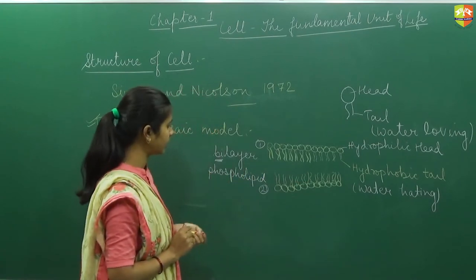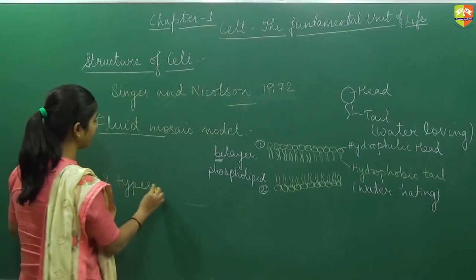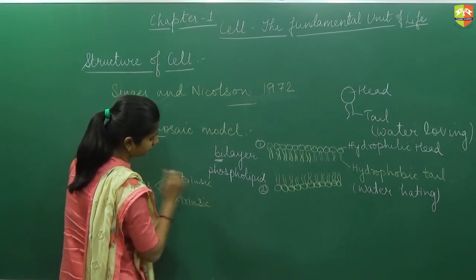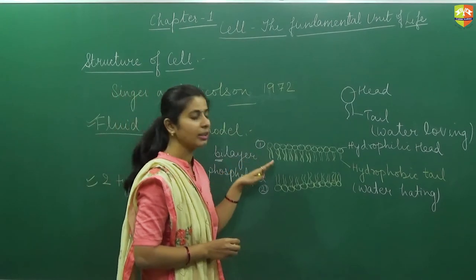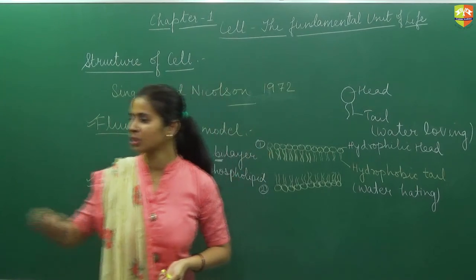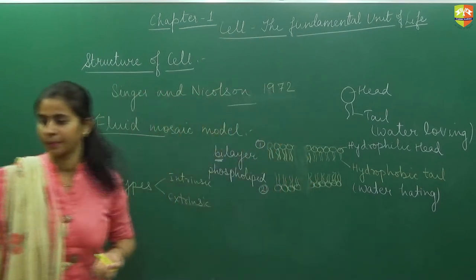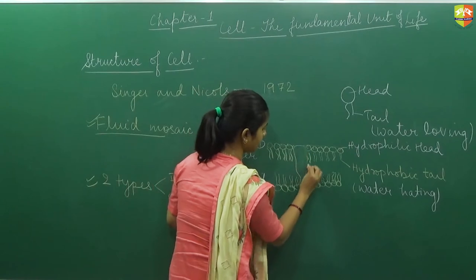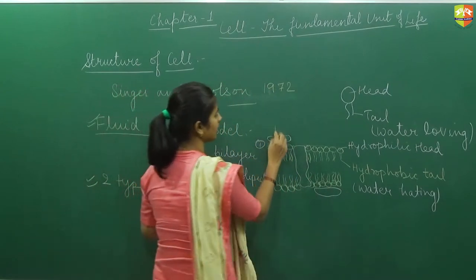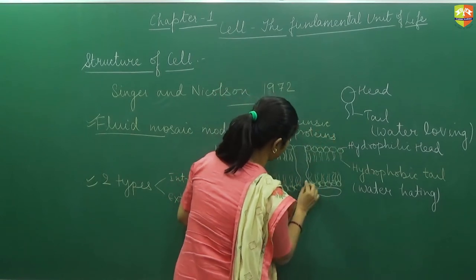One more thing — the structure of the plasma membrane contains two types of protein. The first is intrinsic protein and the second is extrinsic protein. As the name suggests, intrinsic protein is present in the inner surface of the lipid, and extrinsic protein is present at the outer surface of the lipids. Let us arrange these proteins in the structure according to the Fluid Mosaic Model.